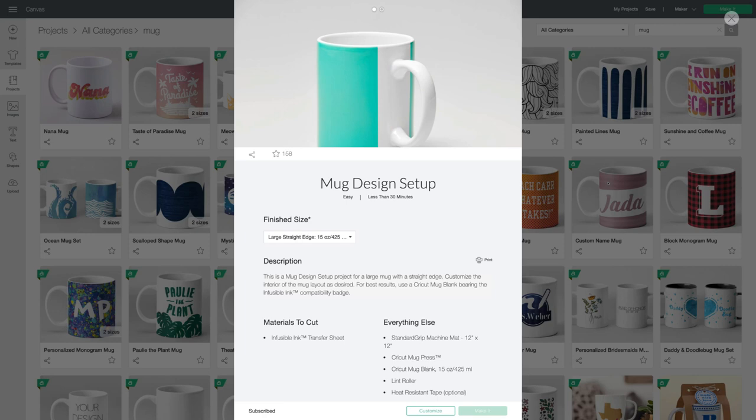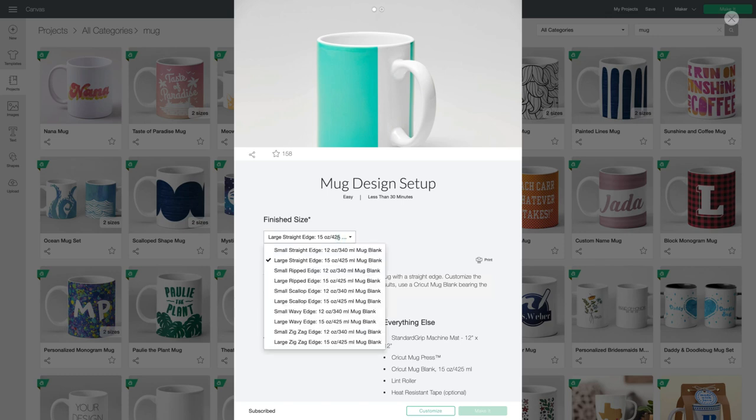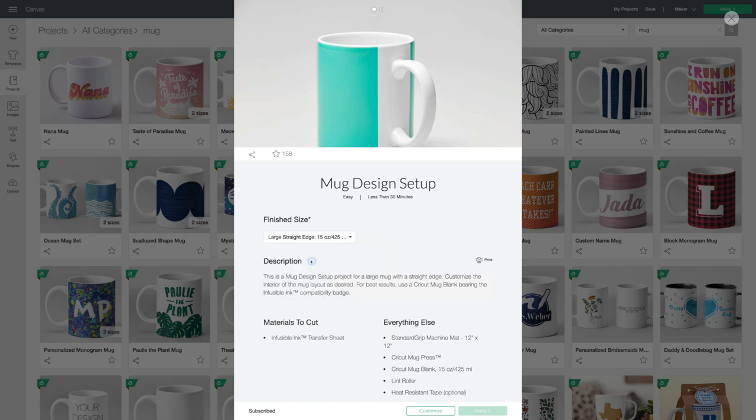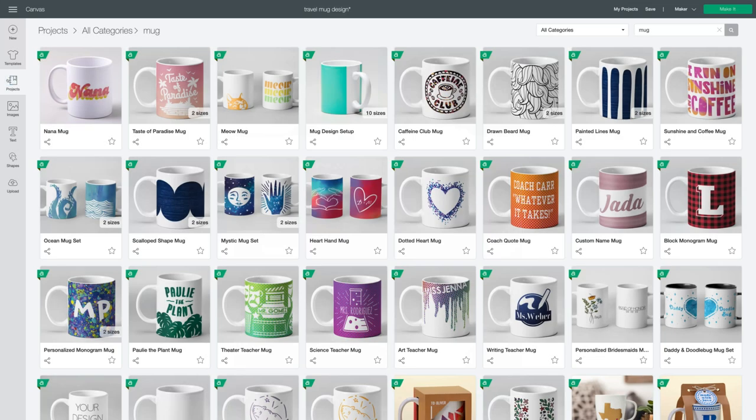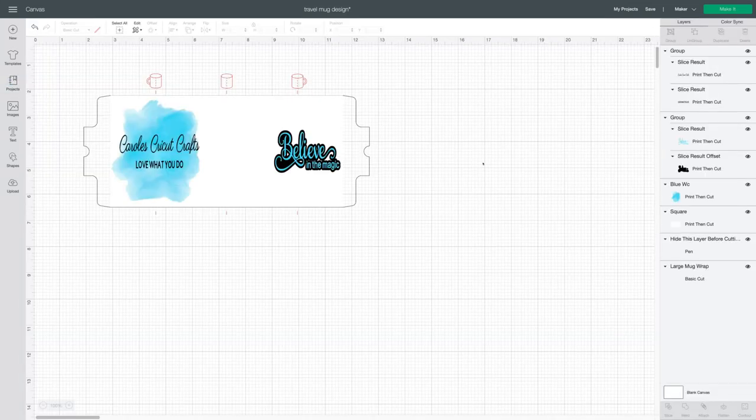I've already prepared my design for my travel mug but I wanted to show you how I set it up. It's a 15.25 ounce mug so I'm using the same template we use for 15 ounce ceramic mugs from Cricut. So I chose to use a large straight edge. I just wanted to have the boundaries all ready for me in Design Space. So let's remove this. We'll close this and we'll go back to my canvas.